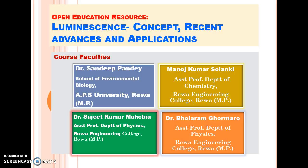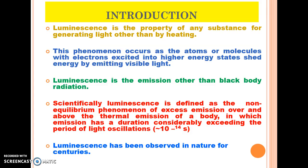To start with, luminescence is the property of any substance for generating light other than by heating. This phenomenon occurs as the atoms or molecules with electrons excited into higher energy states shed energy by emitting visible light. Luminescence is the emission other than black body radiation. Scientifically, luminescence is defined as the non-equilibrium phenomenon of excess emission over and above the thermal emission of a body, in which emission has a duration considerably exceeding the period of light oscillations.